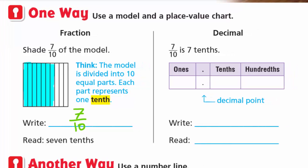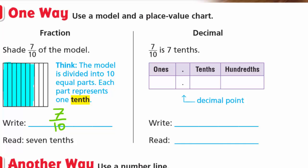Now let's use the place value chart. For 7 tenths, how many ones do we have? We don't have any ones, so 0 ones, and we have 7 at the tenths place and nothing at hundredths. So we write it as 0.7, which is 7 tenths. Remember, tenths ends with 'th'.